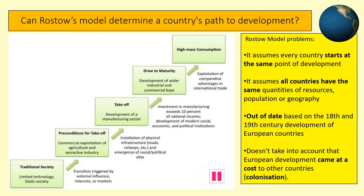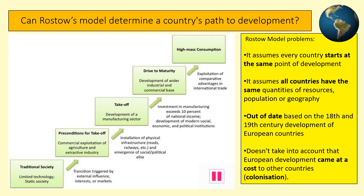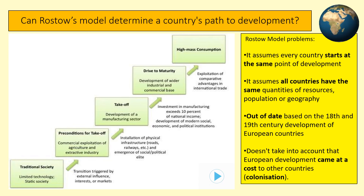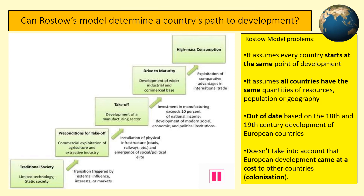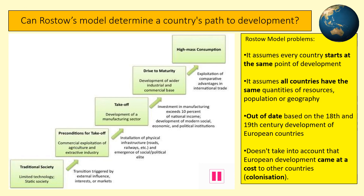Rostow's model, like most models, is rather simplistic and does have a number of problems worth noting. The model was based upon European cities' development and assumed each country had the same resources to start with. It does not take into account modern globalisation or the adverse effects of colonisation, such as Belgium's effect upon the DRC. Pause the show and make a few notes on the drawbacks of the Rostow model.